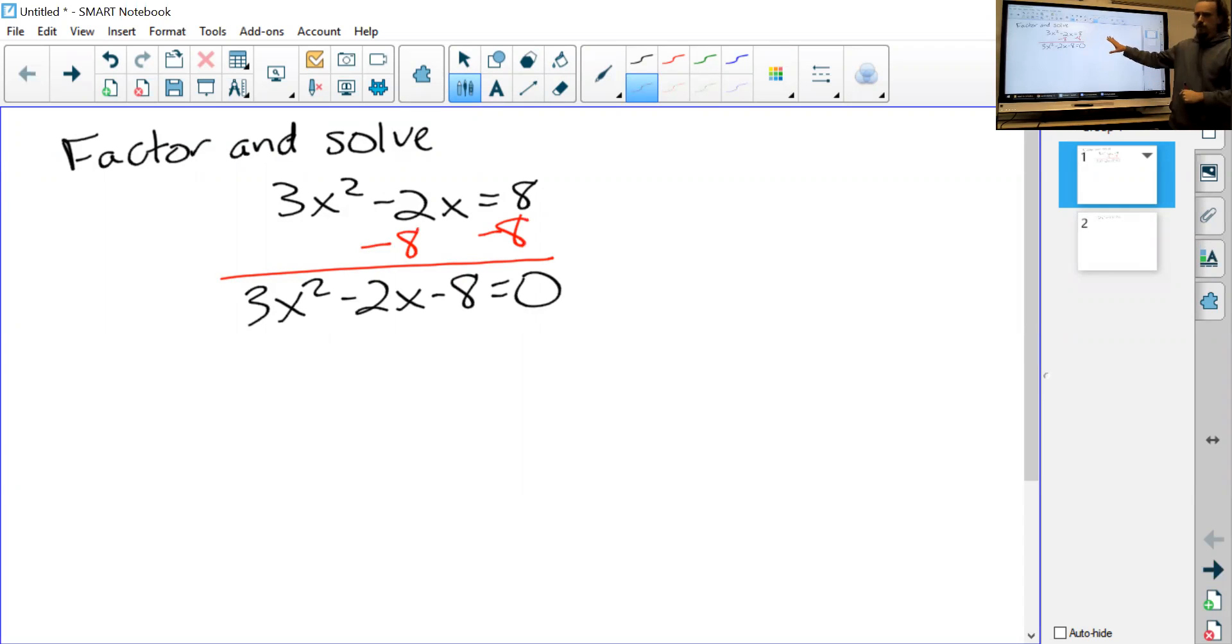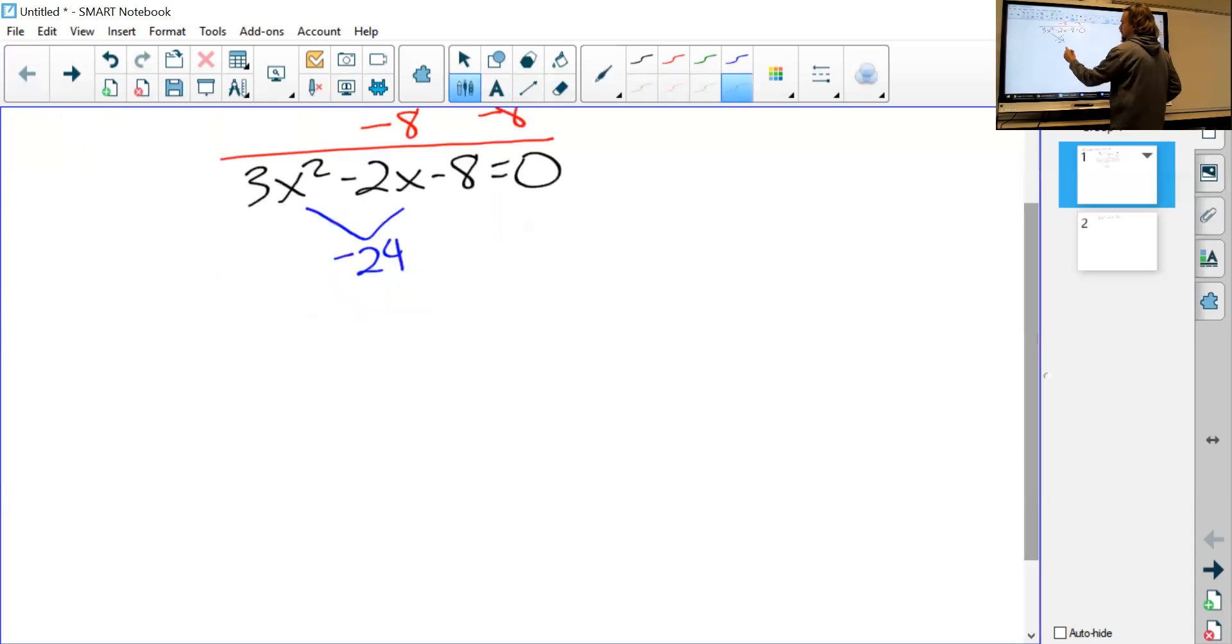There's a key point: we need to have equal zero on one side. Then we sort of ignore the zero for a while and we do what we've been doing—we factor out what we can. 3x² - 2x - 8, we know how to do that. This multiplies to give us -24.